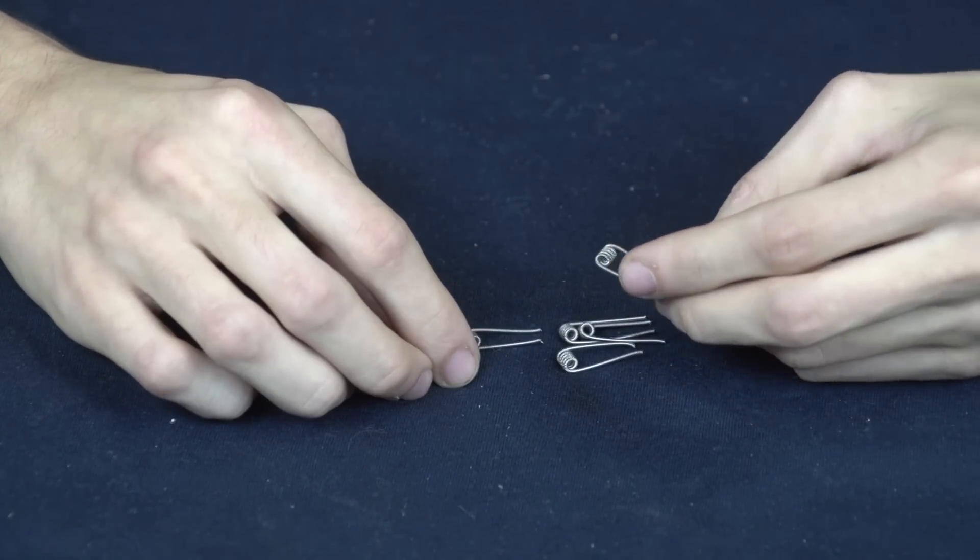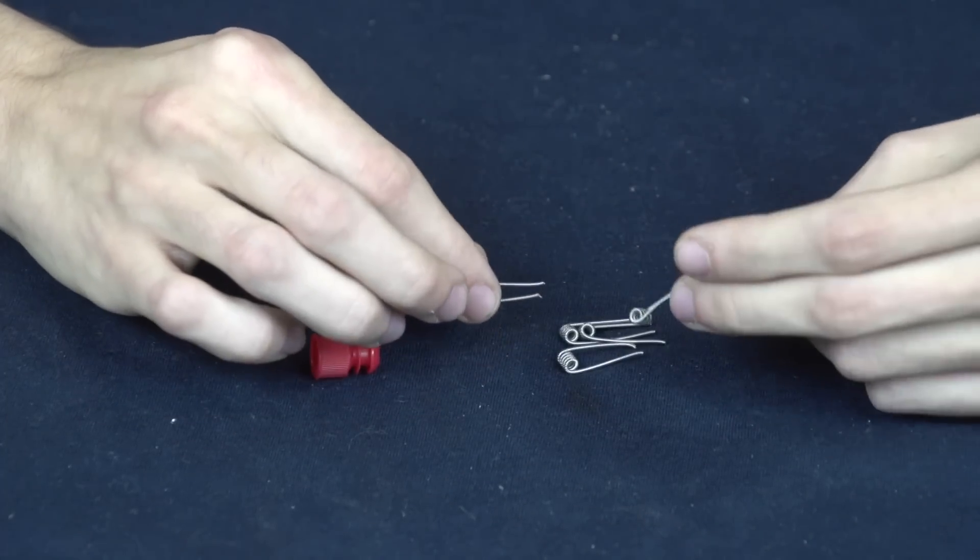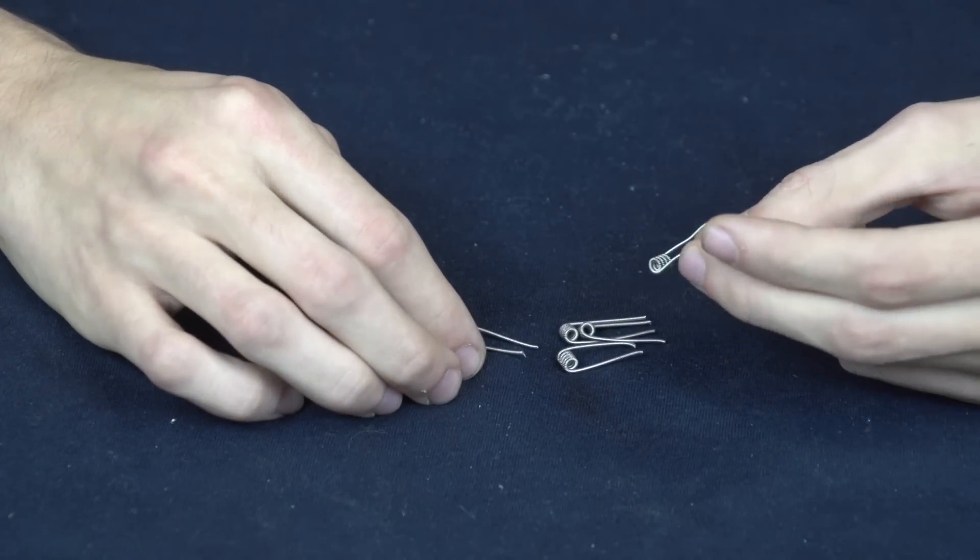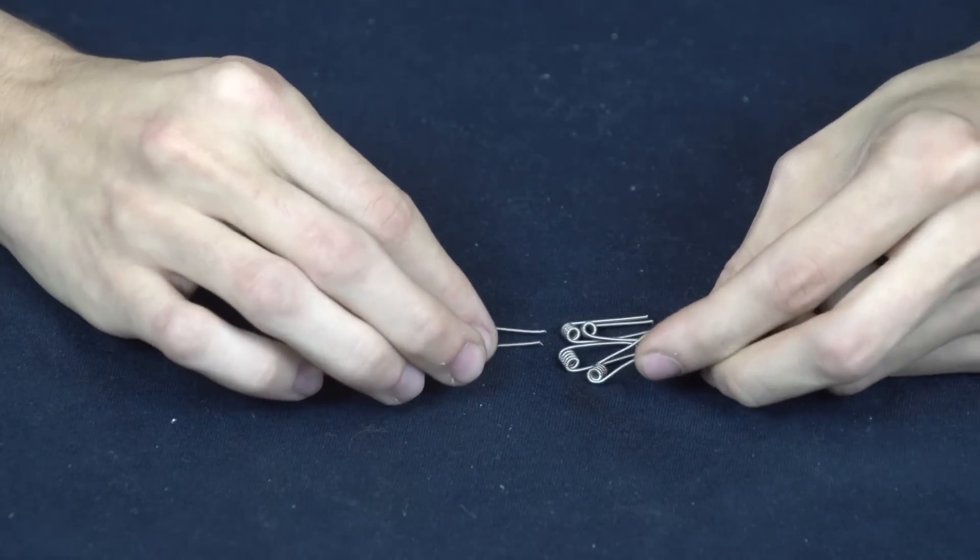These coils are rated at .5 ohm, which is a pretty good resistance for a Clapton coil. If you do two of them, that will cut the resistance in half. So you'll be looking at a .25 ohm build if you use two of them in your RDA.